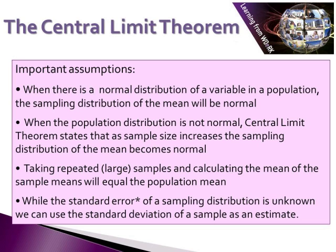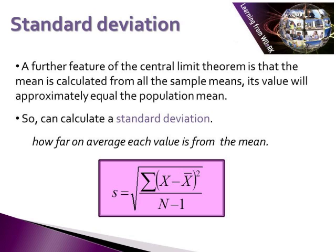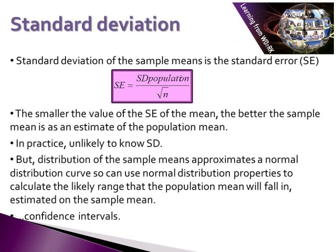Standard error is what we call the standard deviation of the sample means. The standard error of a sampling distribution is estimated using the standard deviation of a sample. A further feature of the central limit theorem is that the mean calculated from all of the sample means will be approximately equal to the population mean. If we calculate the mean of sample means, we can also calculate a standard deviation. Standard deviation is, in plain English, how far on average each value is from the mean. The standard deviation of all sample means is what we call the standard error, which equals the standard deviation of the population divided by the square root of n, the number of cases.